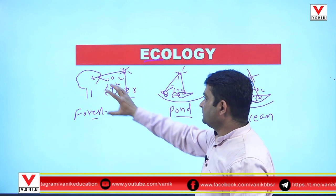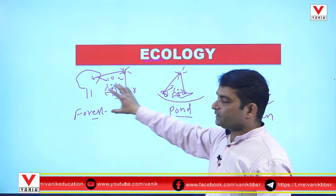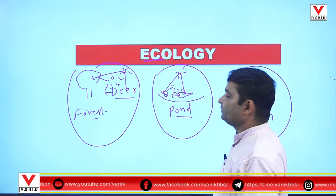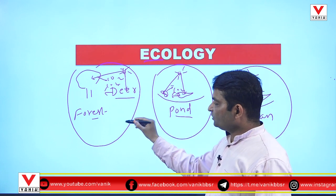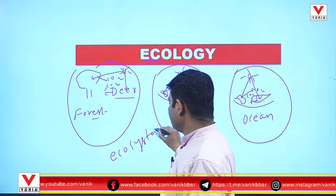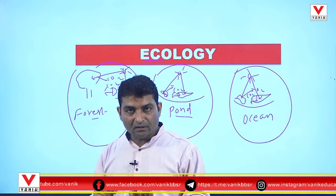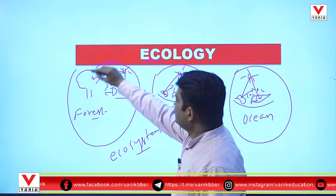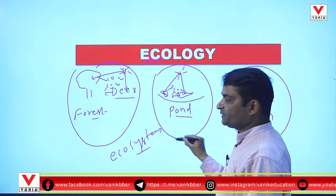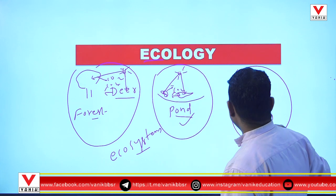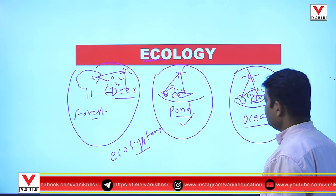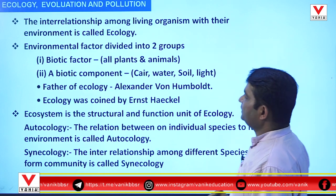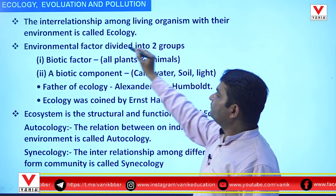Now, each of these is an Ecology of a specific area. The Ecology of a specific area is called an Ecosystem. Ecology means the interrelationship of living organisms with their environment. But the ecology of a specific area is called an ecosystem. This is the Forest Ecosystem, this is the Pond Ecosystem, and this is the Ocean Ecosystem. This is the overall idea of ecology and ecosystem.